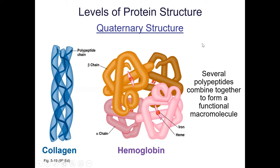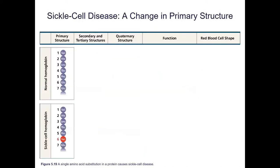I want to show you why protein structure is important to biology and understanding disease. This diagram talks about sickle cell disease — what happens to the protein structure when we have one amino acid change. At amino acid number six, normal hemoglobin has glutamic acid, an acidic amino acid with a negative charge. In the mutated version, that position is replaced by valine, a hydrophobic amino acid — going from something polar and soluble to something insoluble and hydrophobic.